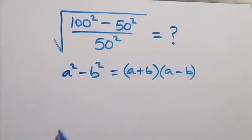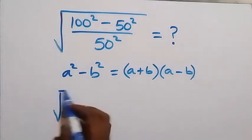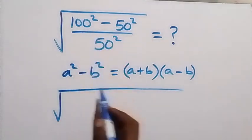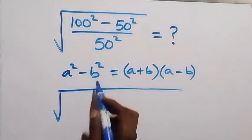Then from here, we write this as square root of, with 100 serving as a and 50 serving as b.